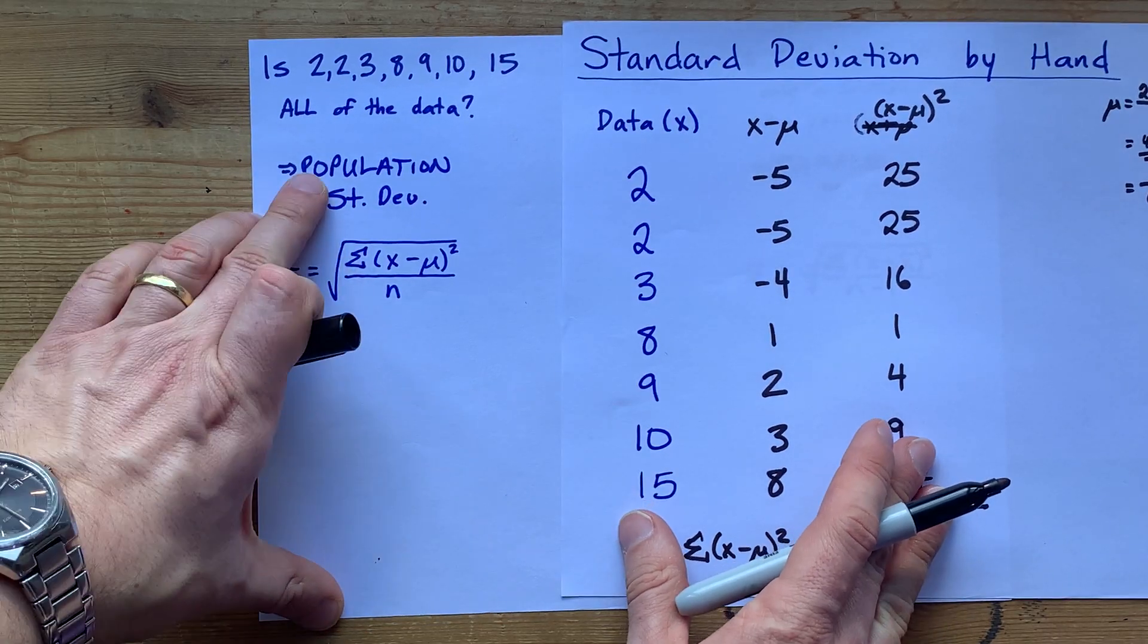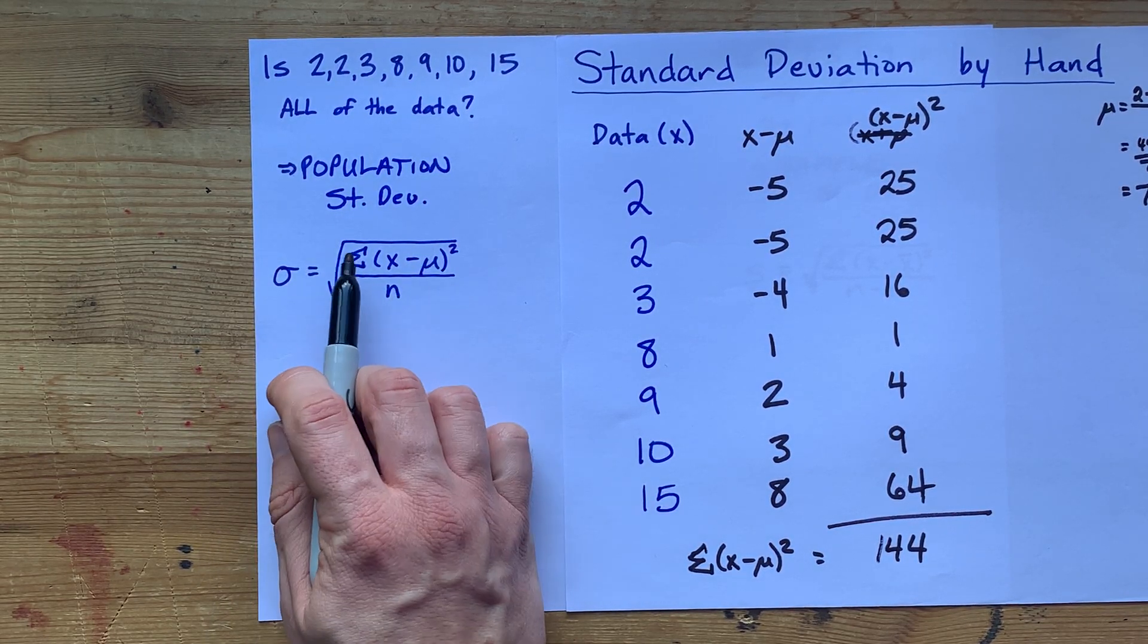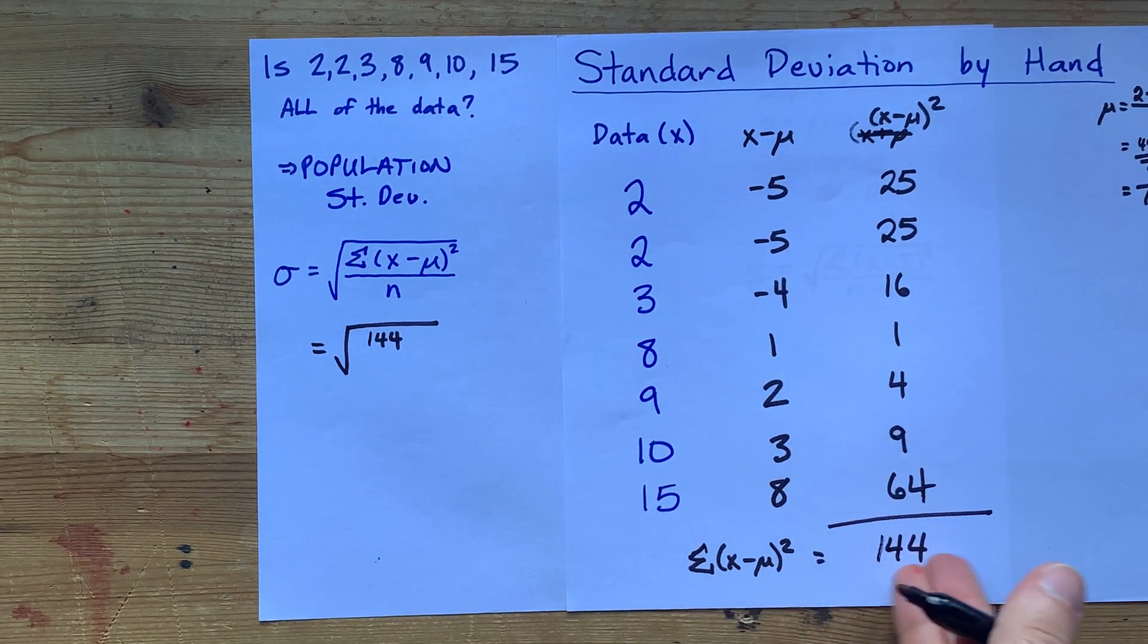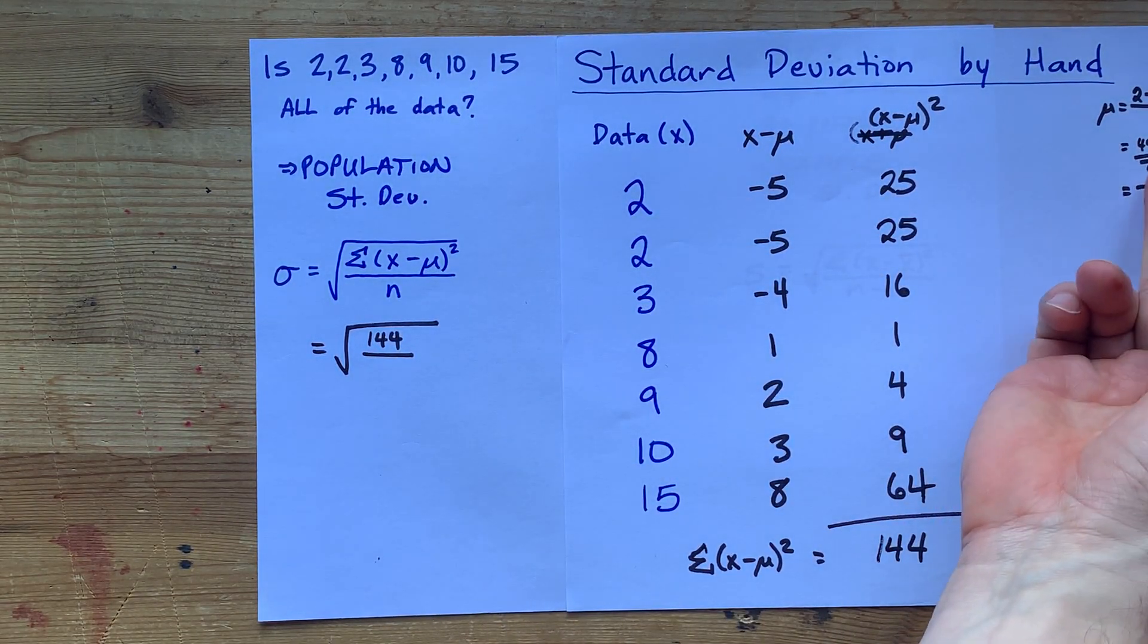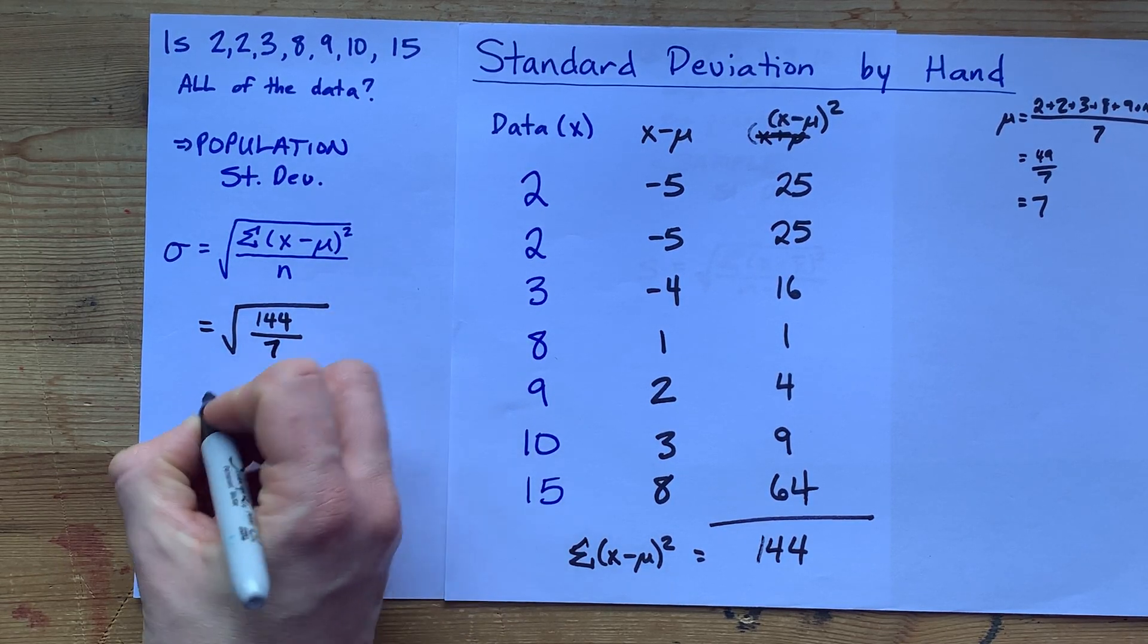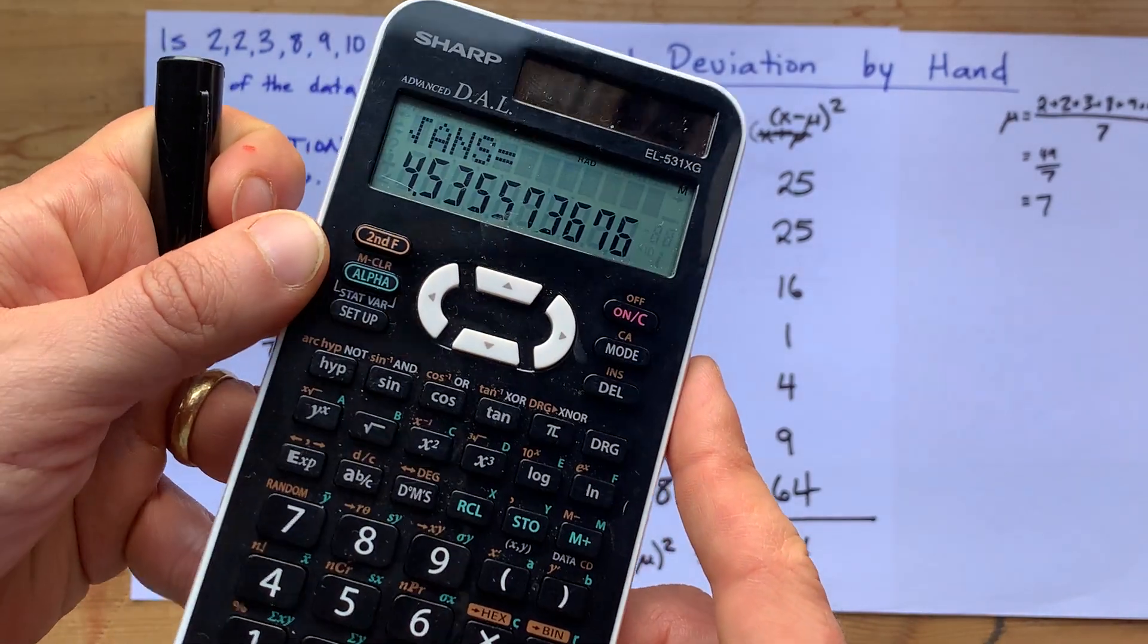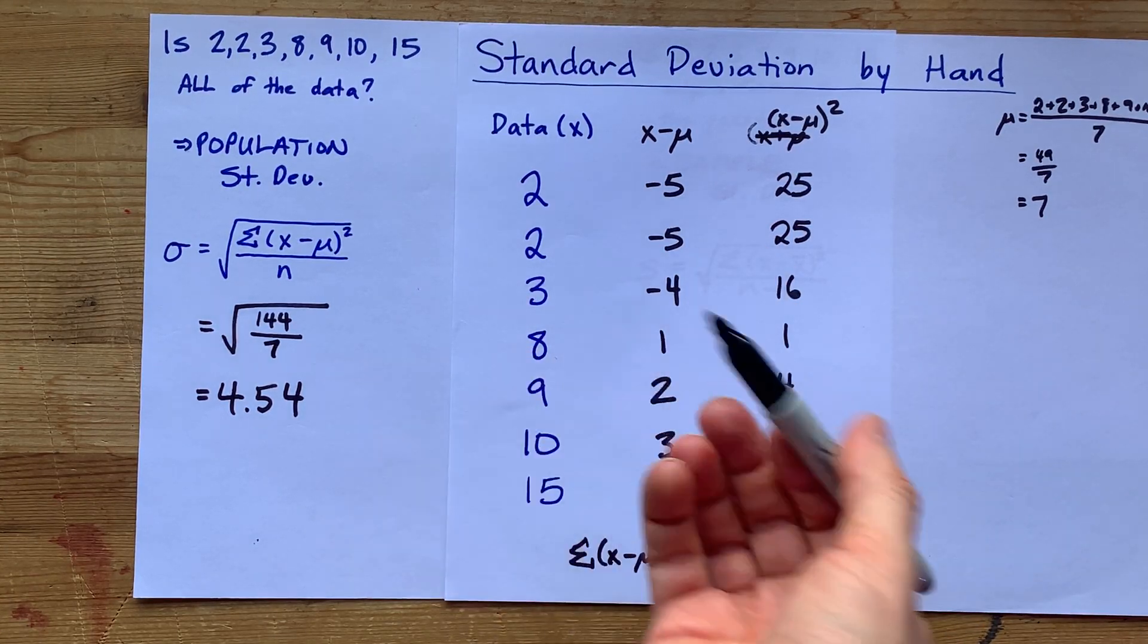Now, if it was all of the data, if you were told this is a population, you're going to calculate the standard deviation by taking the square root of that sum that you just calculated divided by n. Now, the sum that I calculated was 144, and I know it felt like a lot of work to get there, but it's so you can plug it into this formula. n is still the number of data points that you had. You used n over here to find the actual mean. 144 divided by 7. Now, I really don't know if your teacher expects you to do this without a calculator, but I'm going to use a calculator, divide it by 7, and then take the square root of that answer. I get 4.54. My population standard deviation for these numbers, if that is all of them, is 4.54.